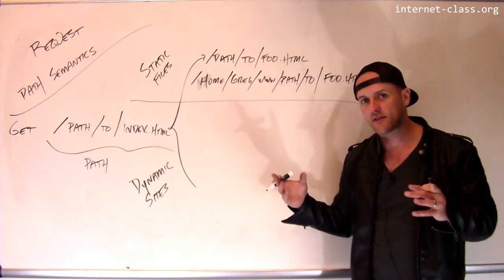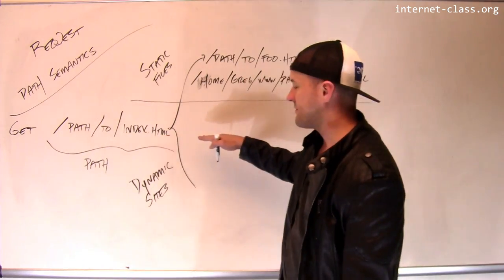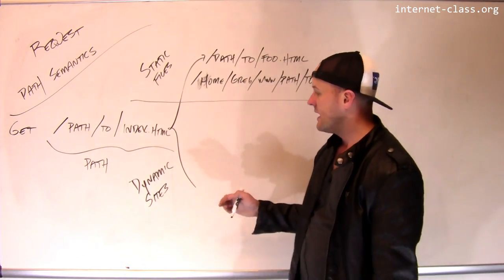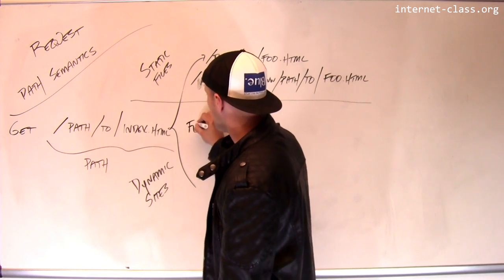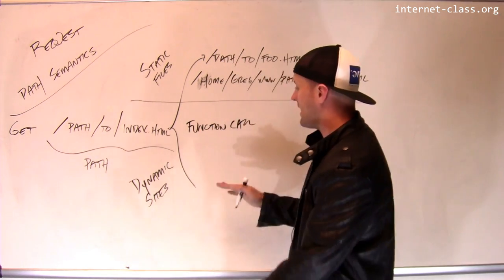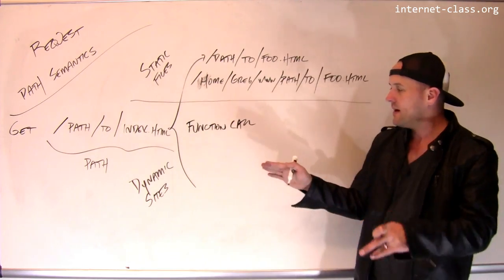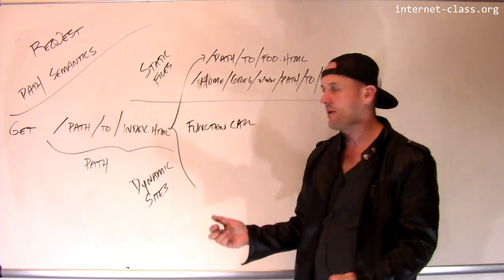Instead, what the server does is it does work to compute a response and then return it to you. And so the semantics of this path are totally different. Really what you can think about this on dynamic sites is you can think about it as making a function call to some function on the site, and the path gets converted in some way to the arguments to that function.